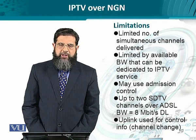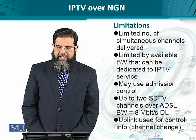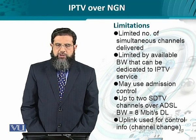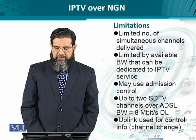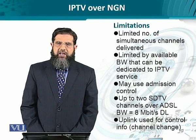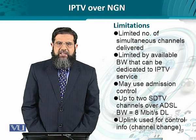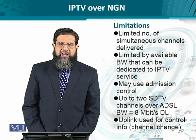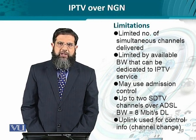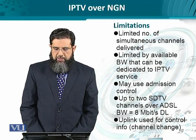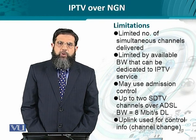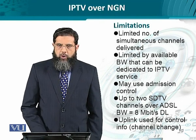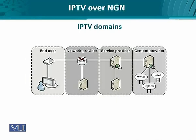When it comes to an individual user or home subscriber, bandwidth on the access side is a limitation. To handle channel switching — just like we switch channels with a TV remote — this can be accommodated through admission control. For a typical DSL connectivity, such as ADSL with eight megabits per second on the downlink, we can accommodate say two channels, or up to a maximum of four channels if no other service is running. Usually two is recommended on the downlink. The uplink is used for transmission of certain control information, for instance when you want to change the channel from one to another. With this, the IPTV mechanics are quite clear.